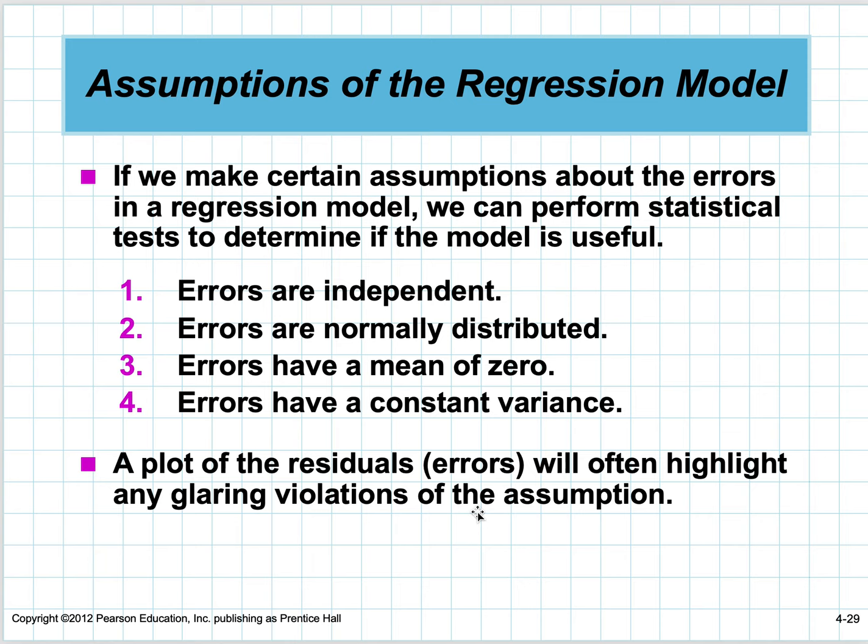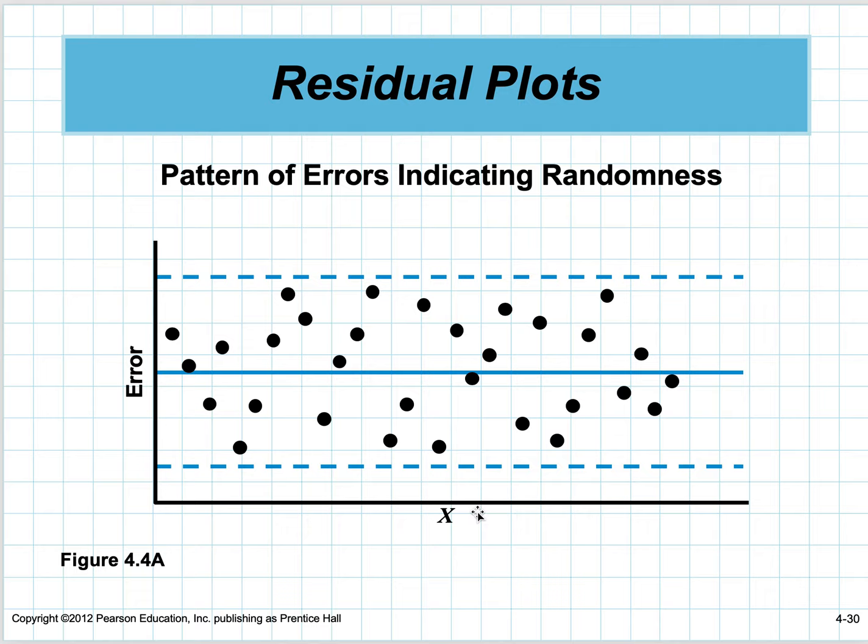The assumptions of the regression model are: errors are independent, errors are normally distributed, errors have a mean of zero, and they have a constant variance.